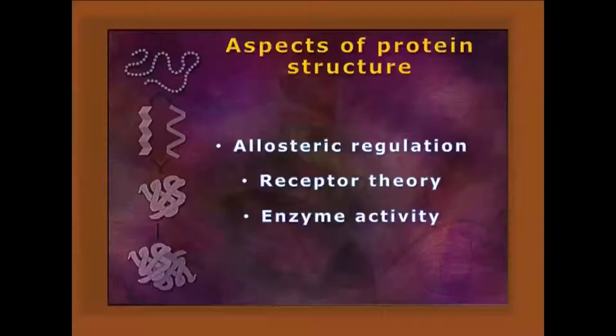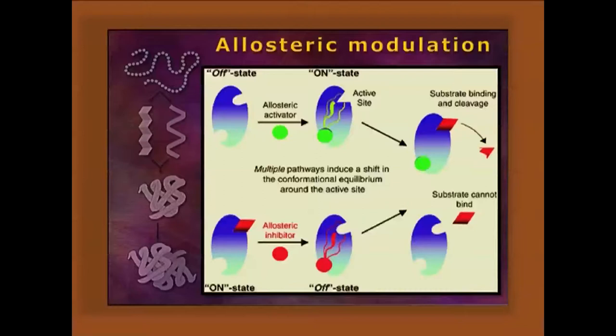Aspects of protein structure include allosteric regulation, receptor theory, and enzyme activity. Allosteric modulation or regulation means that in multimeric proteins, conformational changes happening in one subunit can be manifested as the same conformational changes in other subunits — the structure and function all change together. There are two types of conformations: tensed T-state and relaxed R-state. Binding of ligand or substrate favors either the T-state or R-state.